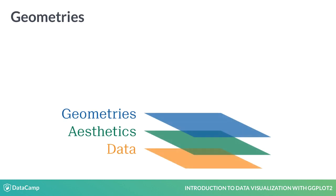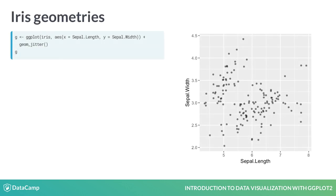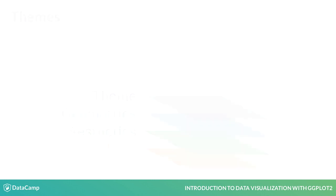The next element is the geometry element. This allows us to choose how the plot will look. After we've established our three essential layers, we have enough instructions to make a basic scatter plot. It's pretty rough, so to get a more meaningful and cleaner visualization, we'll have to use the other layers.